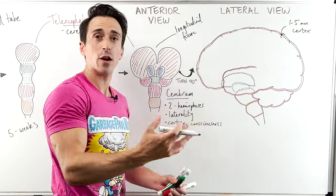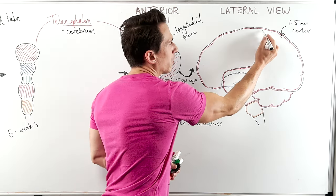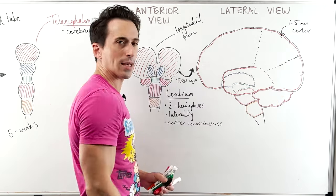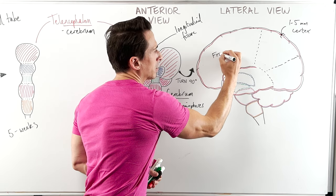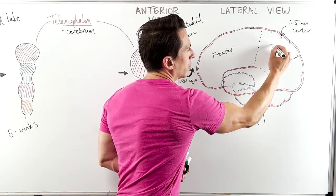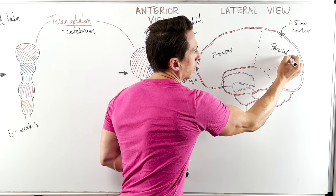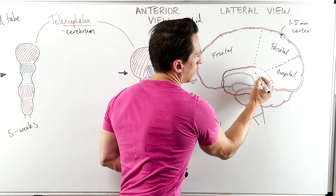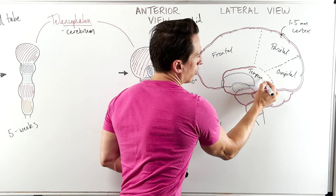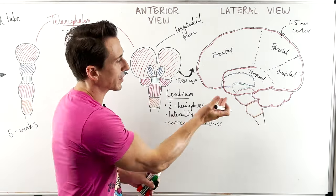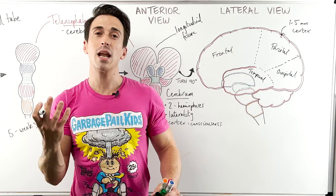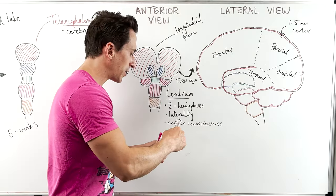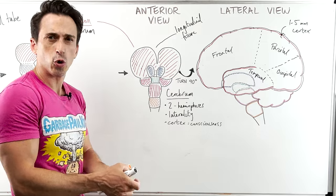You can actually separate the cortex out into various functional lobes. Roughly, the separating lines are like this — you've got the frontal lobe sitting at the front, the parietal lobe, the occipital lobe, and the temporal lobe sitting around about your temple and your ear. In actual fact, if you were to lift up your temporal lobe and have a look, there's going to be another lobe called the insula. Some recognize it as a lobe, some don't, but it is a functional lobe.